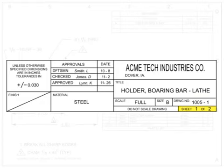Sheet numbering is critical when working on complex parts as they may require several sheets of drawings. The first number indicates which sheet is being viewed. The second number indicates how many sheets there are total for the drawing.